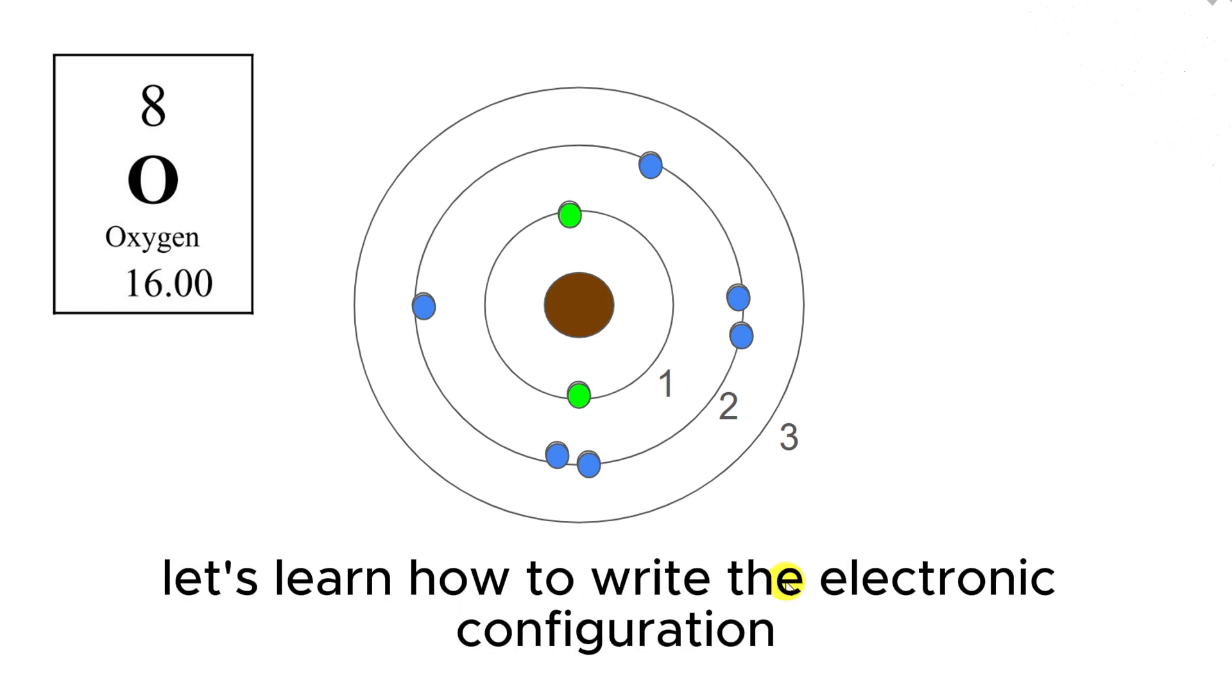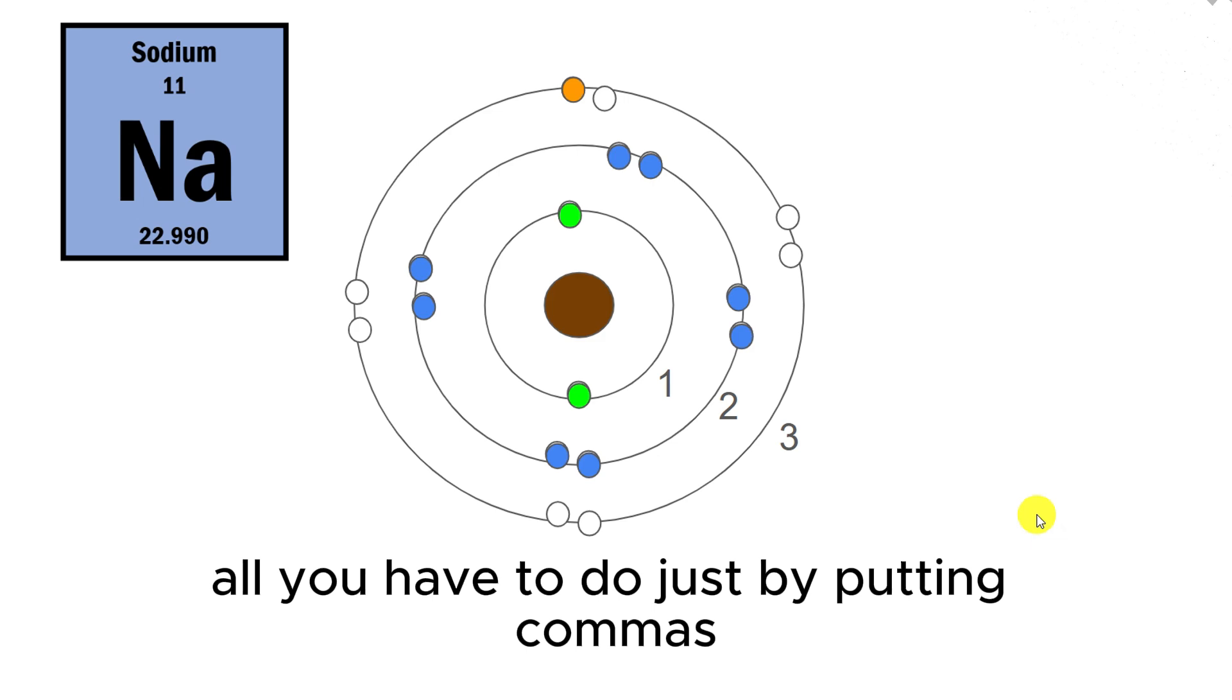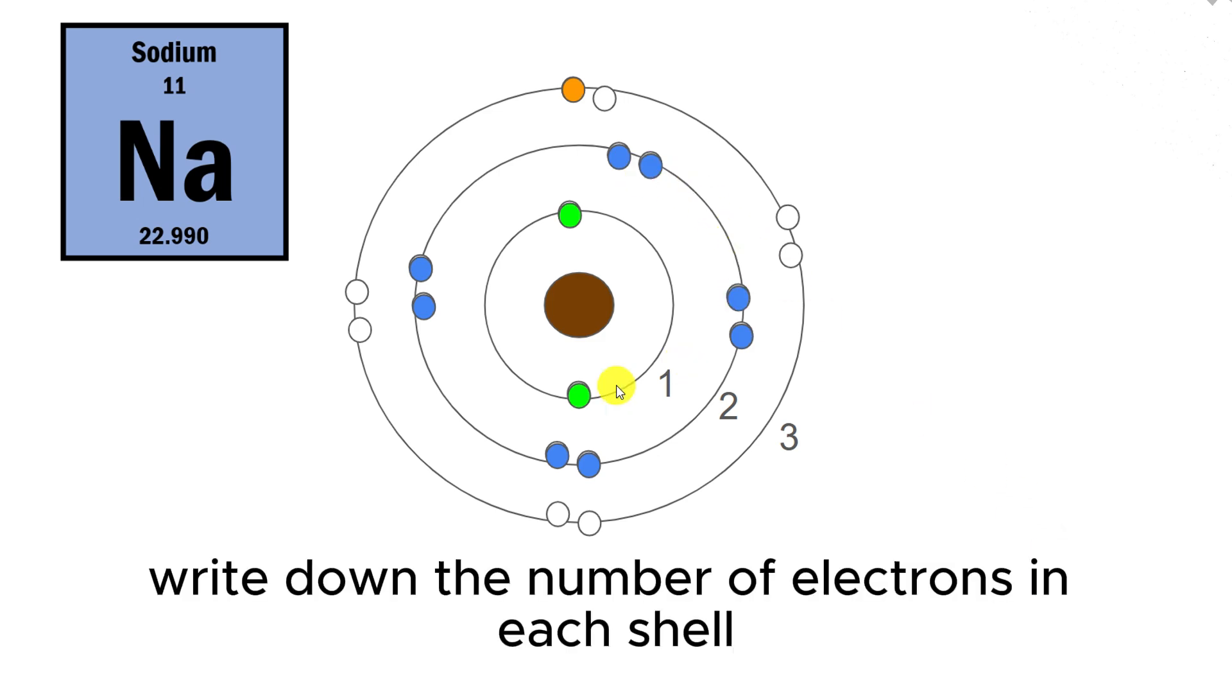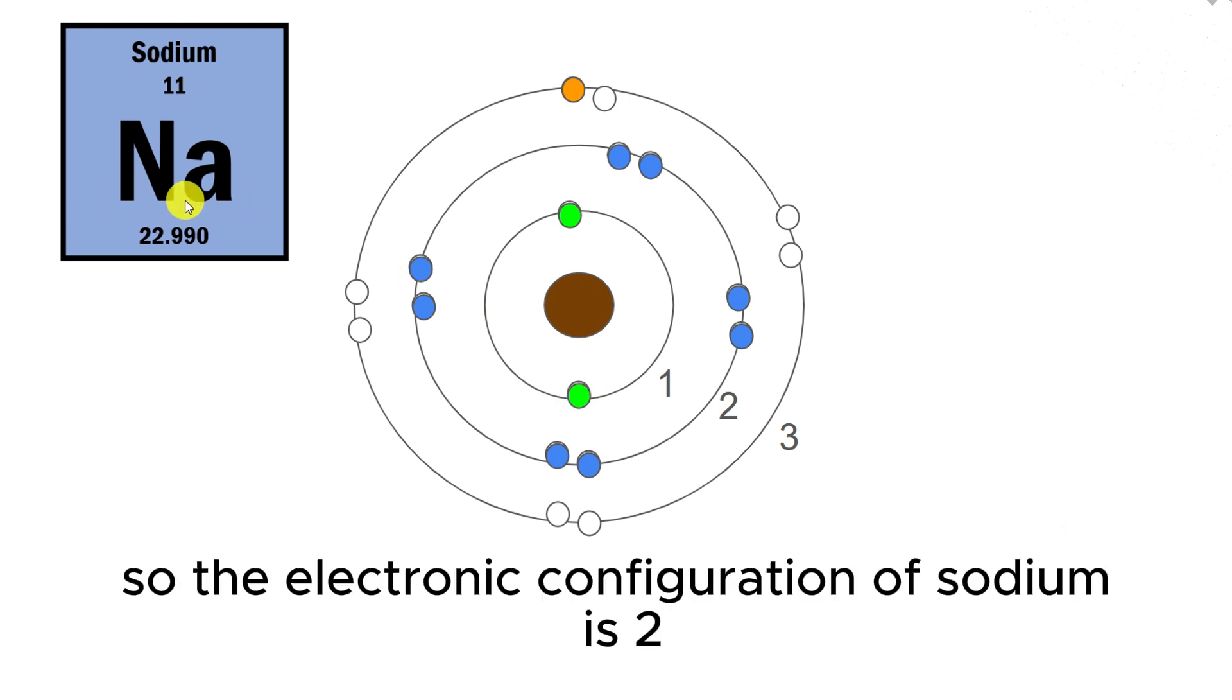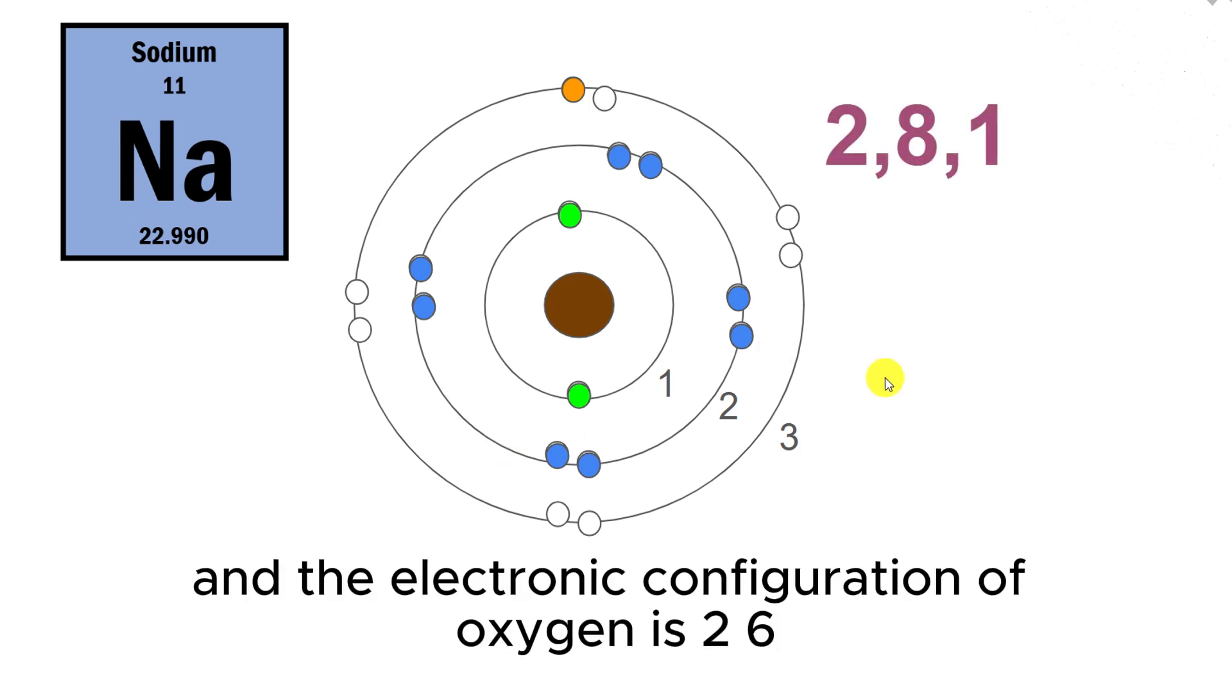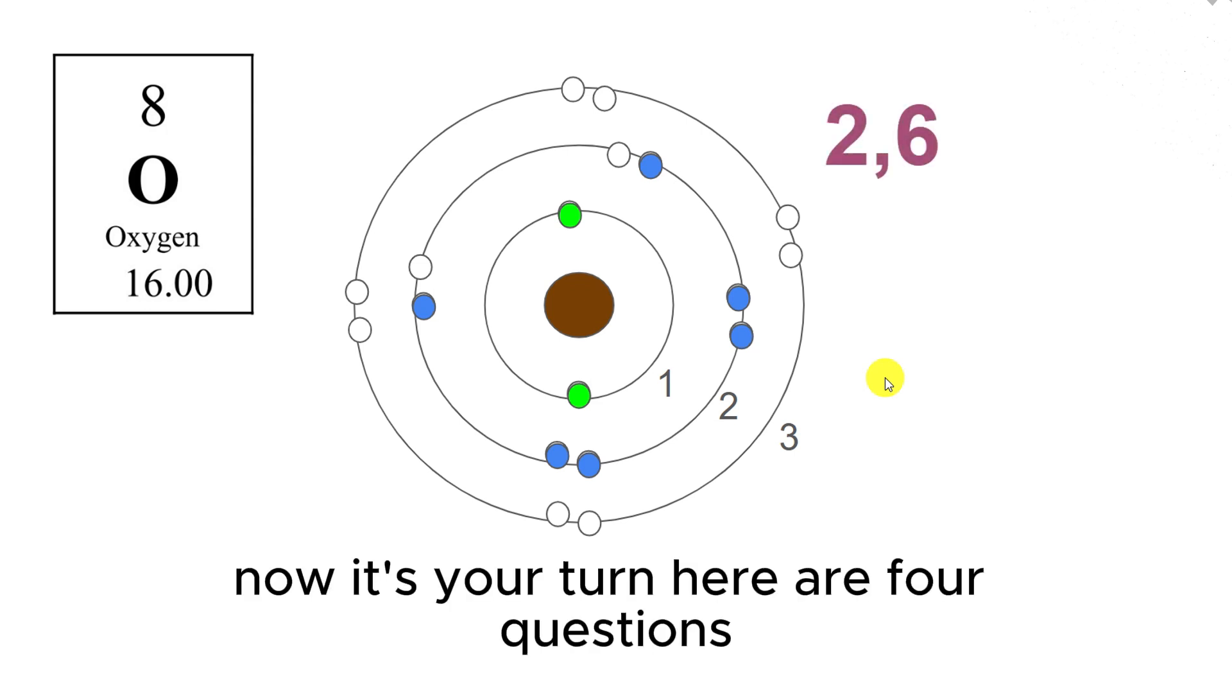Now let's learn how to write the electronic configuration, which is not that difficult. All you have to do, just by putting commas, write down the number of electrons in each shell chronologically. So the electronic configuration of sodium is 2,8,1 and the electronic configuration of oxygen is 2,6. Now it's your turn.